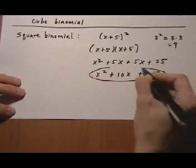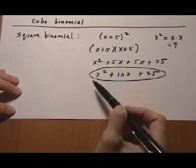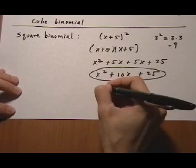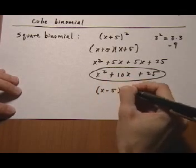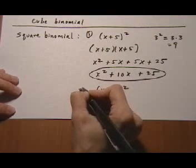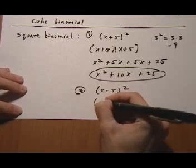Now we could have the exact same binomial but with a minus sign instead. Let's see how different that looks: (x - 5) squared. This is still squaring a binomial, which means (x - 5) multiplies by itself two times.